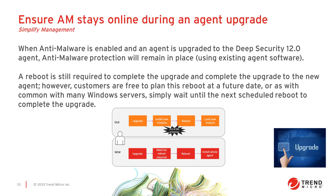Another great feature with Deep Security 12 is the ability to keep the anti-malware engine online with protection in place during an agent upgrade. When anti-malware is enabled and an agent is upgraded to the Deep Security 12 agent, anti-malware protection will remain in place. A reboot is still required to complete the upgrade; however, customers are free to plan this reboot at a future date, or as is common with many Windows servers, simply wait until the next scheduled reboot to complete the upgrade.